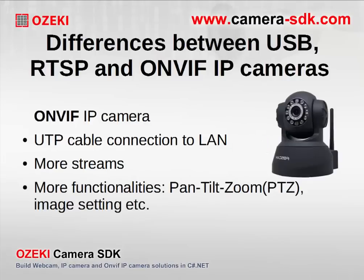Finally, the ONVIF standard IP camera. Its connection is similar to the RTSP camera, connecting via a UTP cable to the network. It has more than one stream. The number of functions is greater — for example, you can move the camera (PTZ) and set image properties like contrast, brightness, and frame rate.